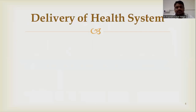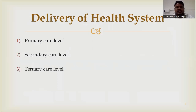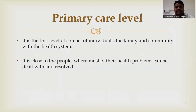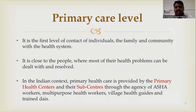The delivery of the health system in India is divided into three levels: primary care, secondary care, and tertiary care. The primary care level is the first level of contact of individuals and community with the health system, close to the people where most health problems can be dealt with or resolved. In the Indian context, primary healthcare is provided by primary health centers and sub-centers, now referred to as Health and Wellness Centers, mainly through ASHA workers, multi-purpose workers, village health guides, and trained dais.